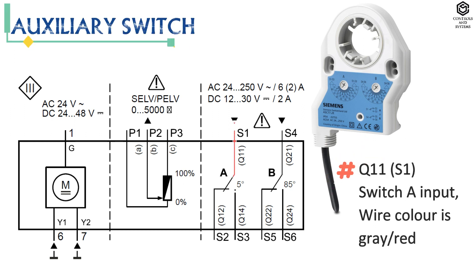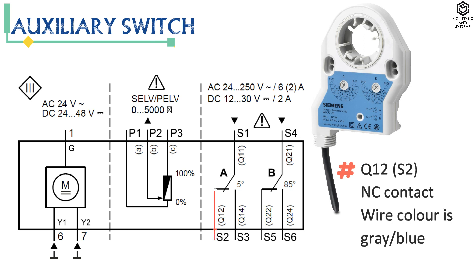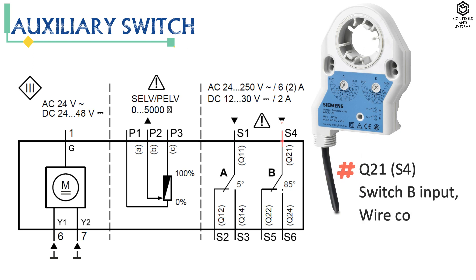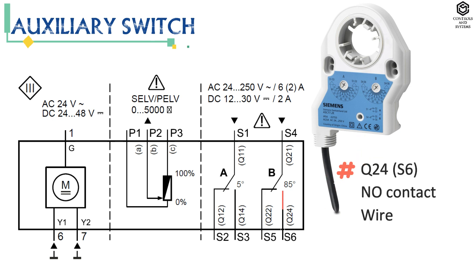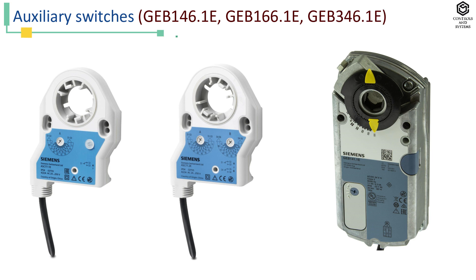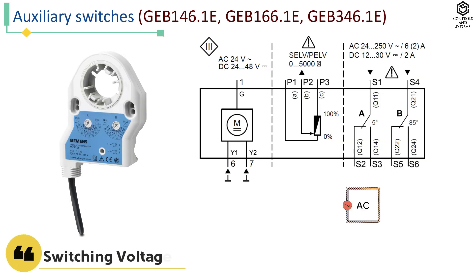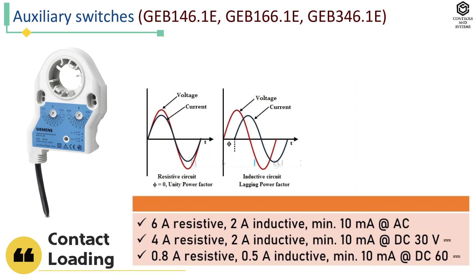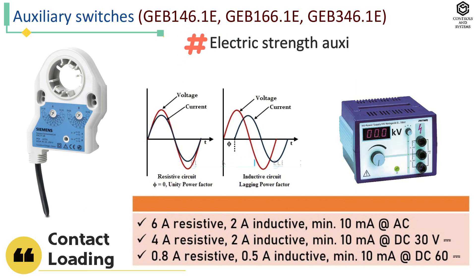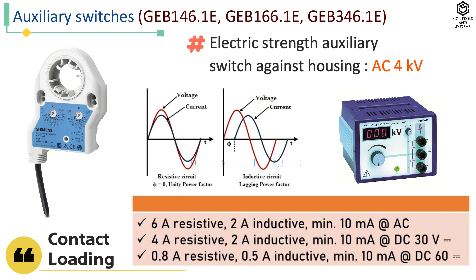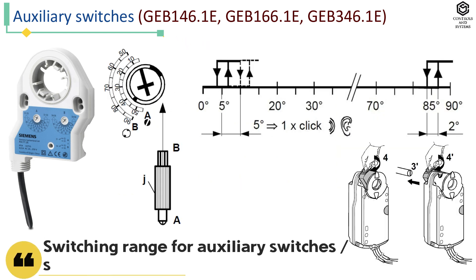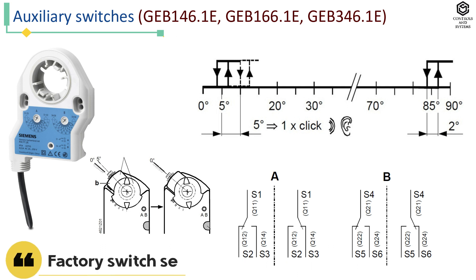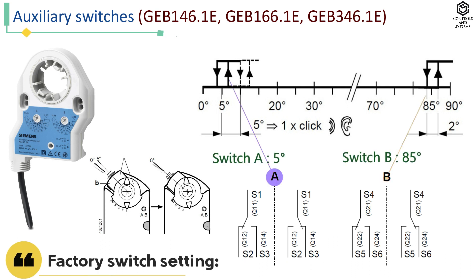Auxiliary switch: Q11 is switch A input, Q12 is NC contact, Q14 is NO contact. Q21 is switch B input, Q22 is NC contact, Q24 is NO contact. Switching voltage is AC 24 to 250 volt or DC 12 to 30 volt. Electric strength of auxiliary switch against housing is AC 4 kilovolts. Switching range is 5 to 90 degrees, setting increments 5 degrees. Factory settings: switch A at 5 degrees, switch B at 85 degrees.